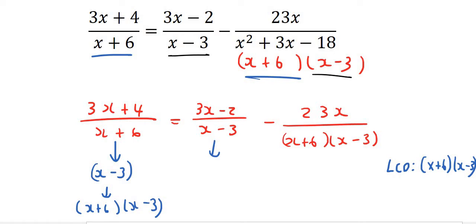I could multiply this one by x plus 6, and that would get us to the common denominator of x minus 3, x plus 6. And then this one here, I don't need to do anything because it already is the common denominator. Now what you do to the bottom, you must always remember to do to the top. So we multiplied this one by x minus 3, this one by x plus 6, and this one we did nothing.